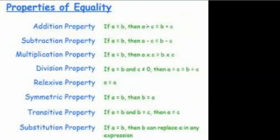The first property is the addition property: if a equals b, then a plus c equals b plus c. The subtraction property: if a equals b, then a minus c equals b minus c.